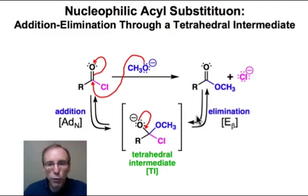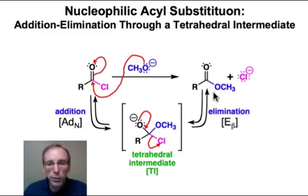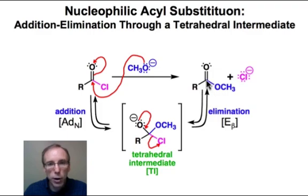However, to go forward — to have forward progress, a productive pathway — is going to involve the loss of the chloride, so that net substitution takes place. The chloride is lost as the chloride anion, and we now generate the new substitution product with the carbonyl-to-oxygen bond.